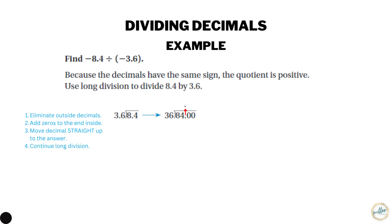Now we start dividing. For 84 divided by 36, we estimate: 80 divided by 40 is 2, so let's try 2. Two times 36 is 72; we subtract from 84 and get 12. We bring down the zero and divide 120 by 36. Estimating 120 divided by 40 is 3, so we try 3. Three times 36 is 108; we put that under 120 and subtract.